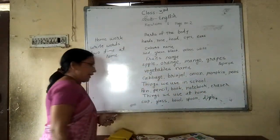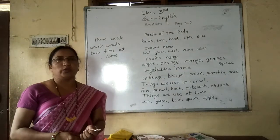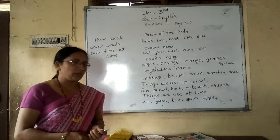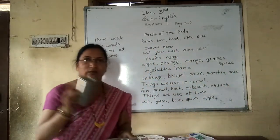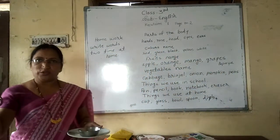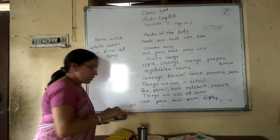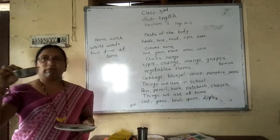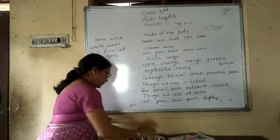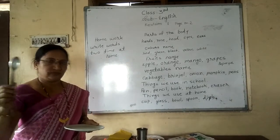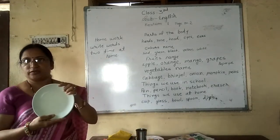Things we use at home. This is a glass. Next, bowl. This is a spoon. And last, this is a dish.